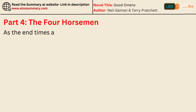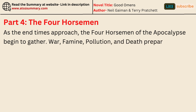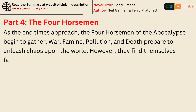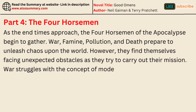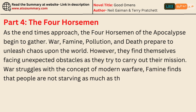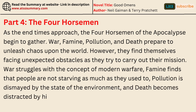As the end times approach, the four horsemen of the apocalypse begin to gather. War, Famine, Pollution, and Death prepare to unleash chaos upon the world. However, they find themselves facing unexpected obstacles as they try to carry out their mission. War struggles with the concept of modern warfare, Famine finds that people are not starving as much as they used to, Pollution is dismayed by the state of the environment, and Death becomes distracted by his fascination with humans.